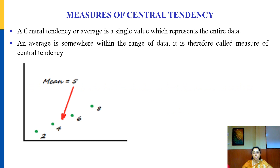In this video, let us discuss measures of central tendency. A central tendency or average is a single value which represents the entire data. For example, with data values 2, 4, 6, and 8, when we add all these values we get 20, and dividing by the number of data values — which is 4 — we get 5. So 5 is the representative figure which represents the entire data set, and is called the central tendency.